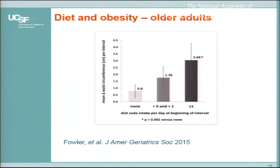I actually didn't find very much specific research that focuses on the connection between hunger and obesity for older adults, which I found quite interesting. This was one example of something I found that looked at diet soda intake in older adults. It was a longitudinal study tracking diet soda intake over time, showing that as they consumed more diet soda, their waist circumference — measured in centimeters — increased.